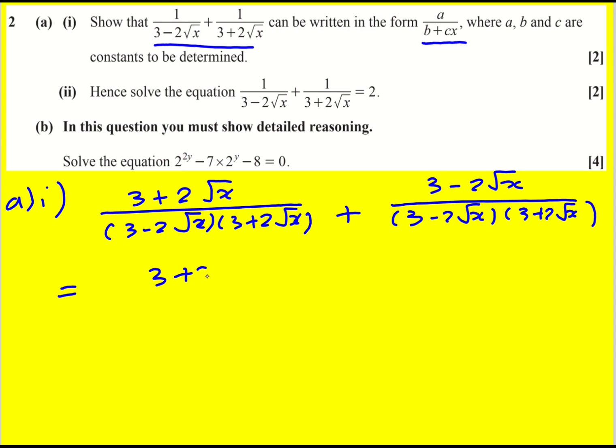Add the tops, 3 plus 2 root x plus 3 minus 2 root x all over. Now expand the bracket, 3 times 3 is 9. Then I've got 6 root x but I've also got minus 6 root x.